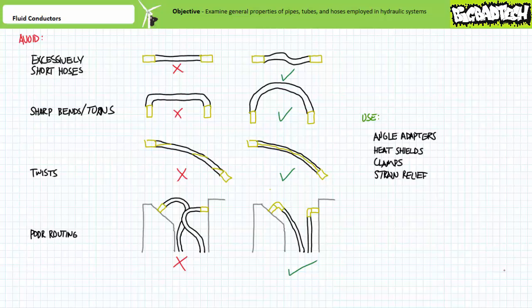Avoid sharp bends, twists, or sharp turns. Some hoses include a colored lay line or manufacturer's logo that will quickly indicate whether the hose is twisted or not.